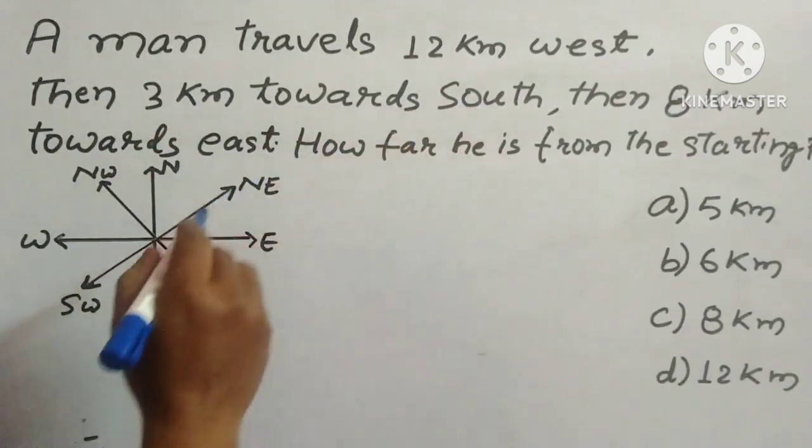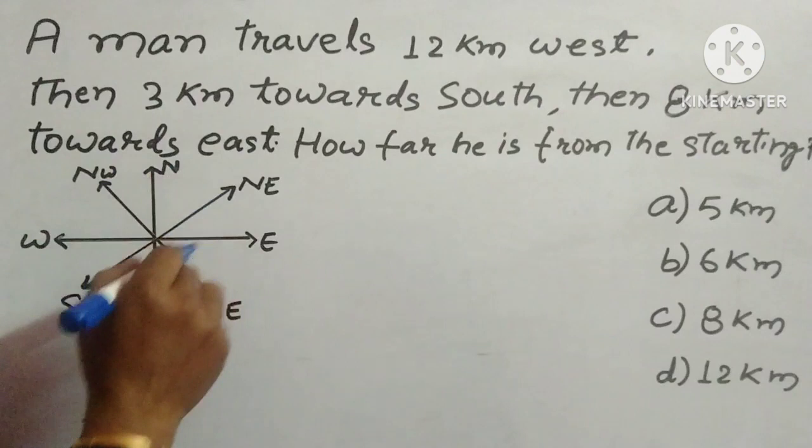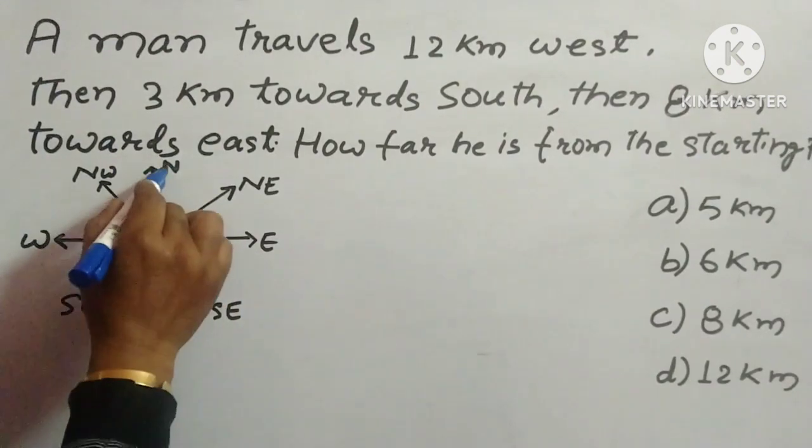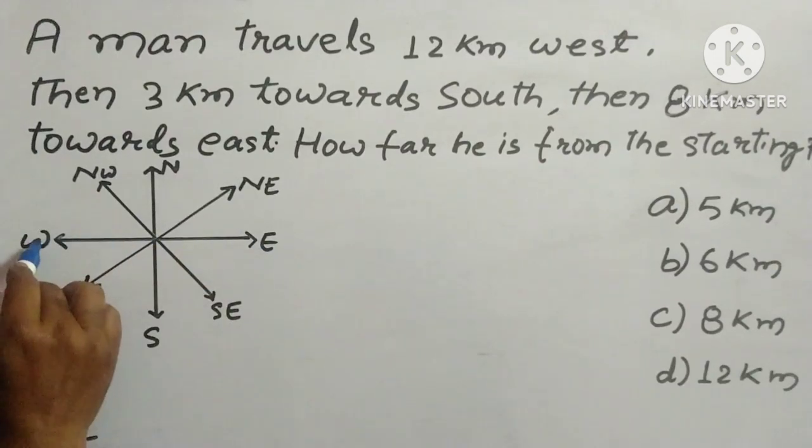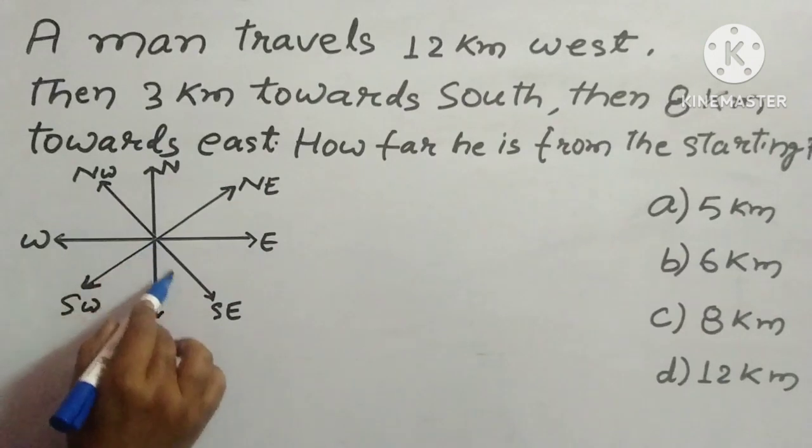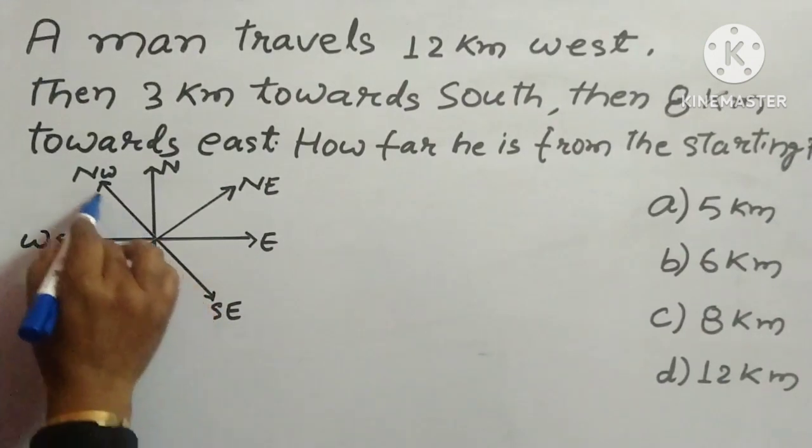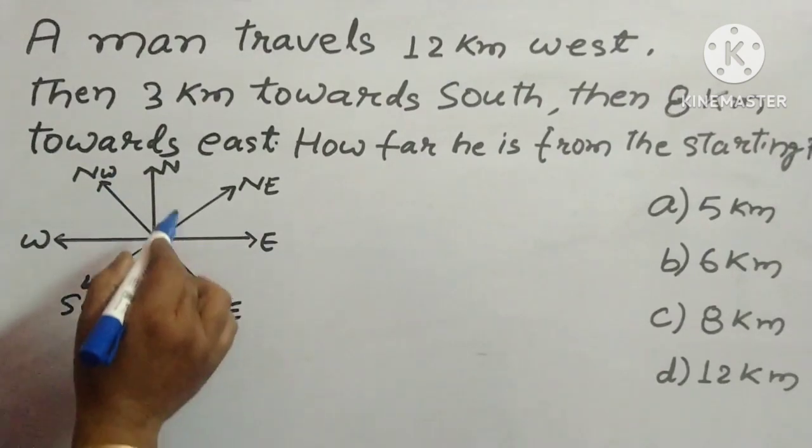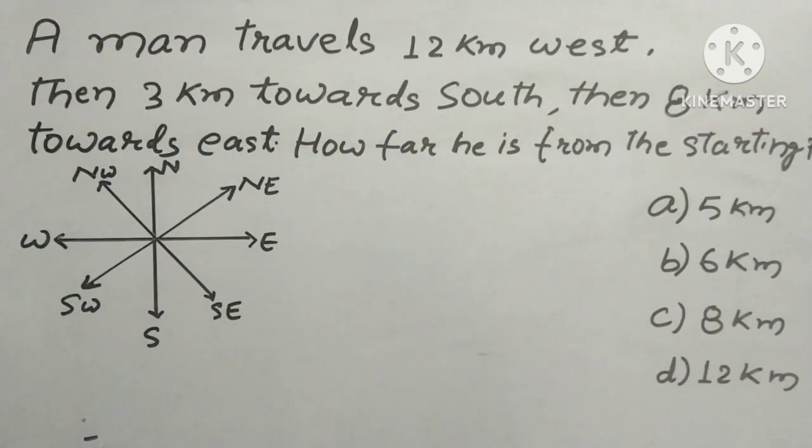In order to solve this type of question, we must know this thing. As I have drawn, this one is North, this is South, this is East, this is West, and this side is North East, this one is South East, this is South West and this is North West. So always remember this figure in order to solve this type of question.